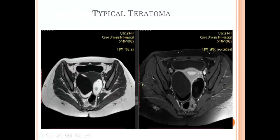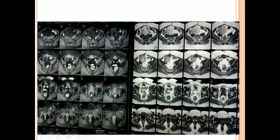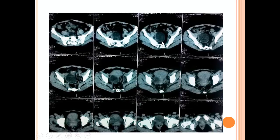Here is another typical teratoma case: the fat component is bright on T1 and completely suppressed on fat suppression — a case of bilateral mature cystic teratoma. Another case on sagittal T2 shows a cystic lesion that is bright on T2 and low signal in areas. It is bright on T1 and suppressed on fat suppression, though the signal intensity is not as high as in the first case. On CT it also shows hypodense fat density in that region.